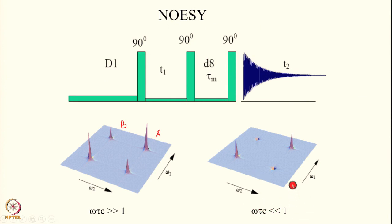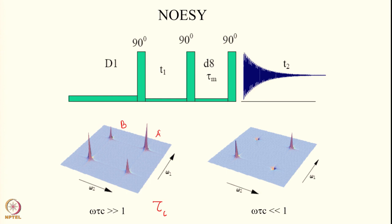When omega*tau_c is much smaller than 1, we have a positive NOE; when it is much larger than 1, we have a negative NOE. Here omega is the spectrometer frequency and tau_c is the correlation time. For large molecules tau_c is of the order of 10^-8 to 10^-9 seconds, while for small molecules tau_c is of the order of 10^-10 to 10^-12 seconds. These two situations give different signs for the NOE.